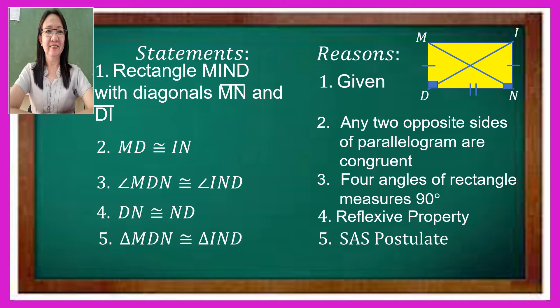Now the other sides, which are the diagonals, MN is congruent to DI, because these are the corresponding parts of congruent triangles — simply, CPCTC.